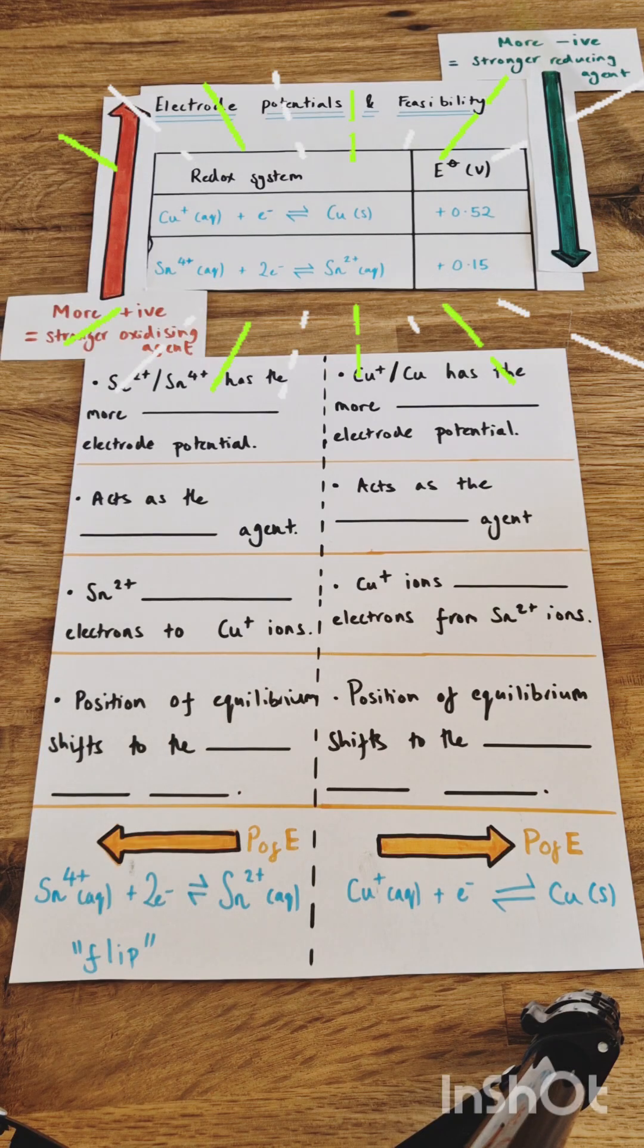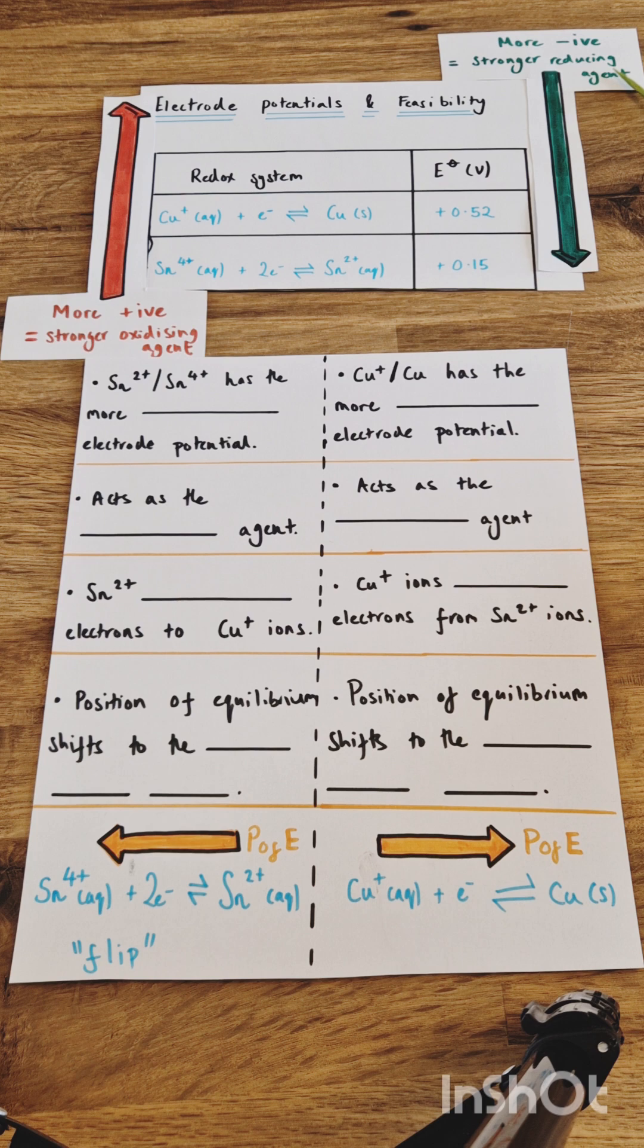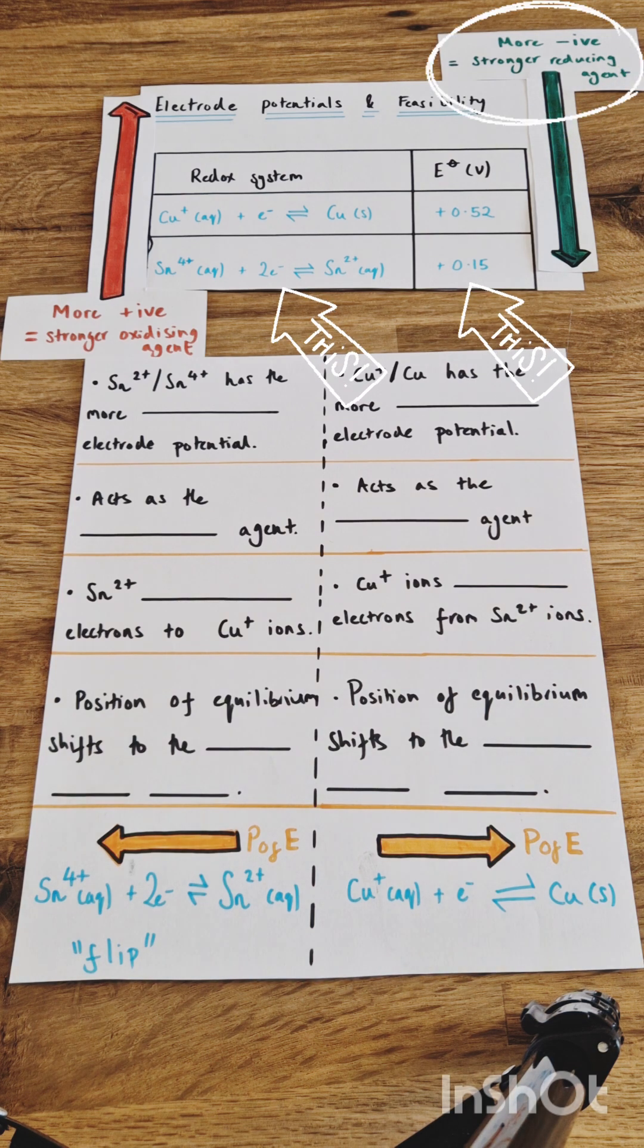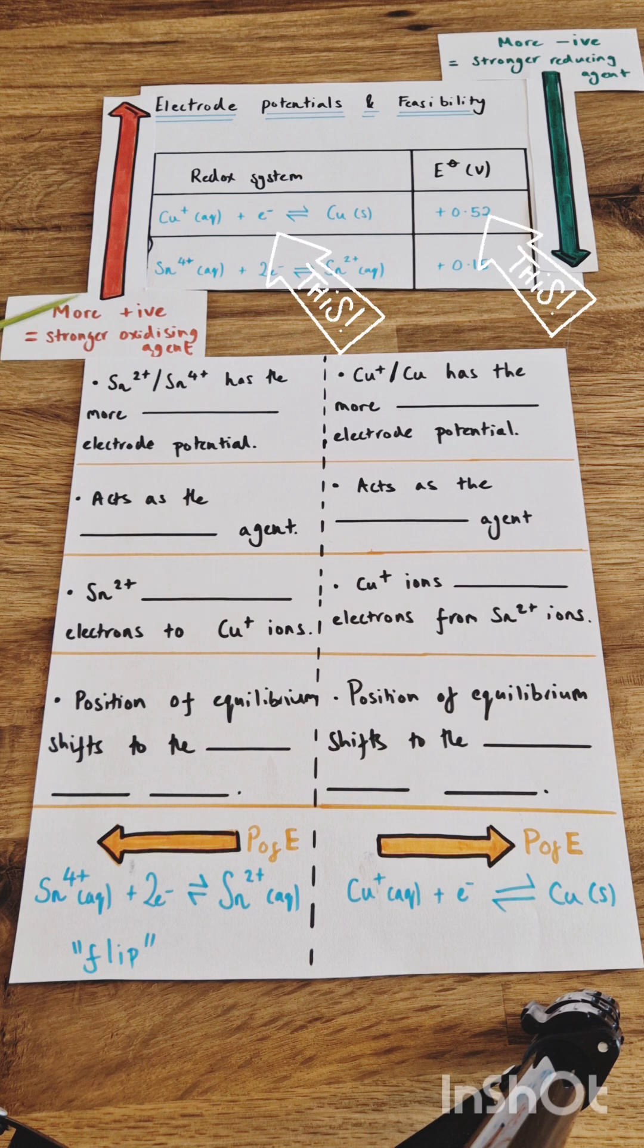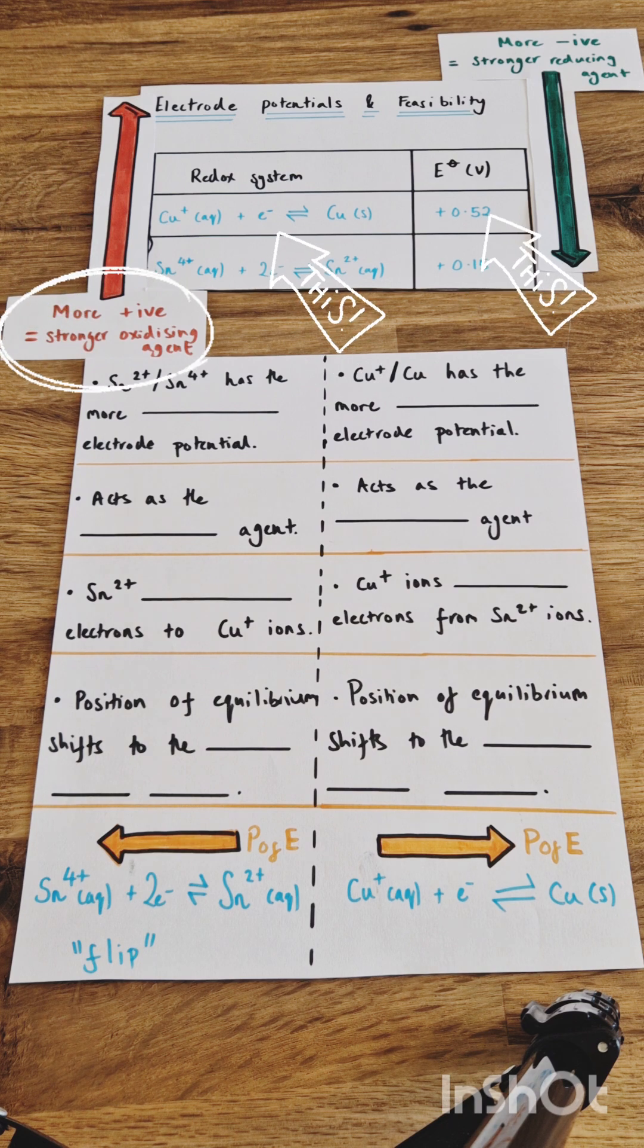Let me show you how to use electropotentials to predict the feasibility of a reaction. When comparing redox reactions against each other, a more negative electropotential denotes the chemical species will behave as a stronger reducing agent, whereas a more positive electropotential denotes the chemical species will behave as a stronger oxidizing agent.